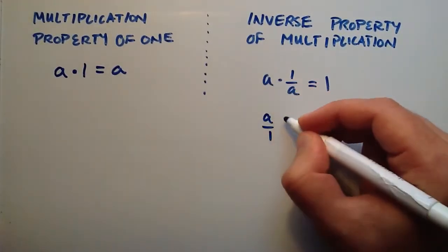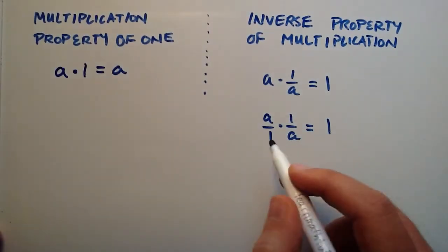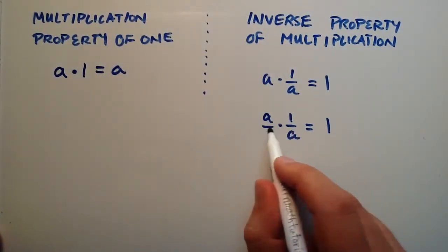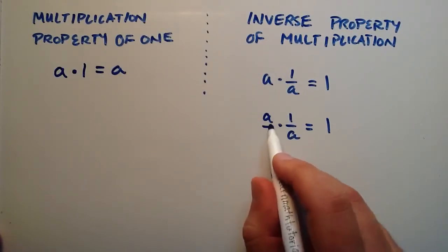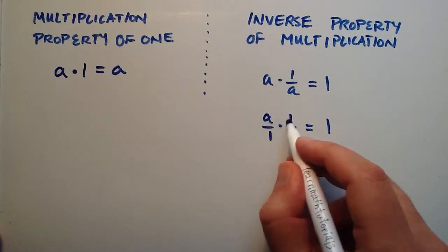And so then we're just going to rewrite the rest of this. And so now we have a multiplication problem of fractions. And when you multiply fractions, you can take the numerator times the numerator,